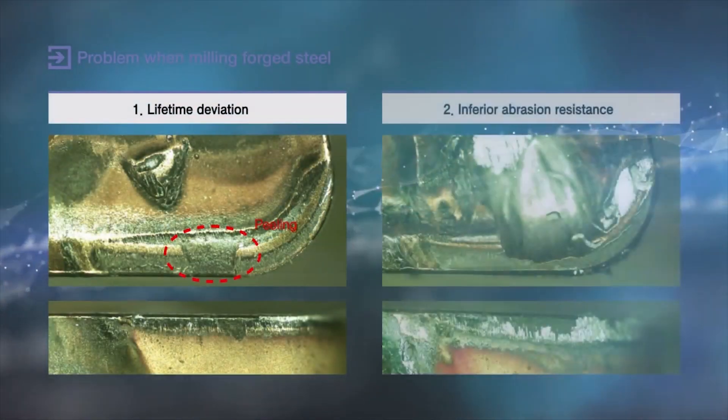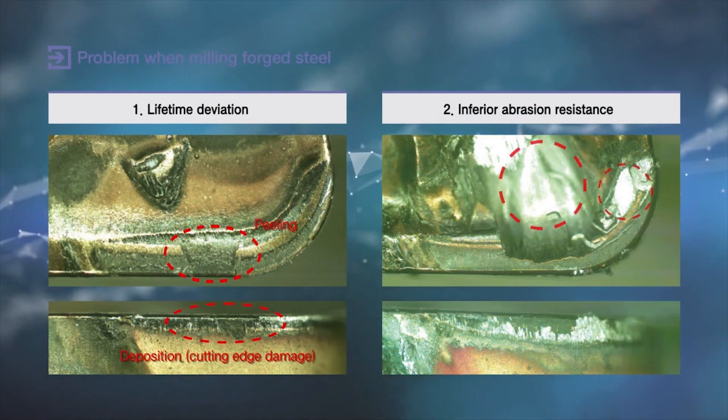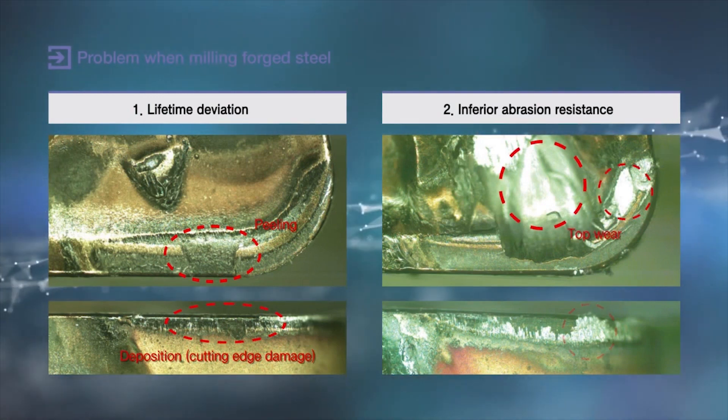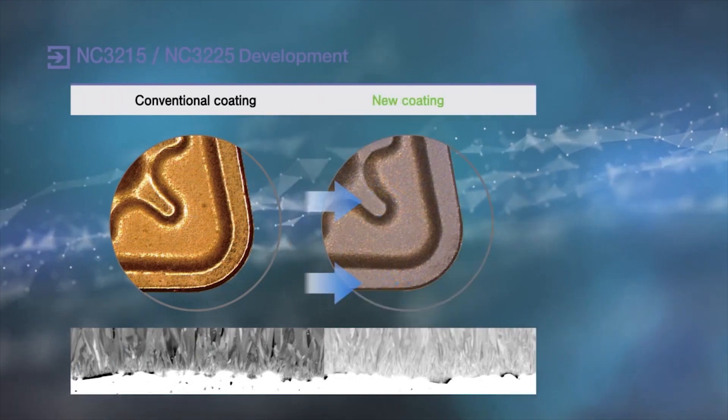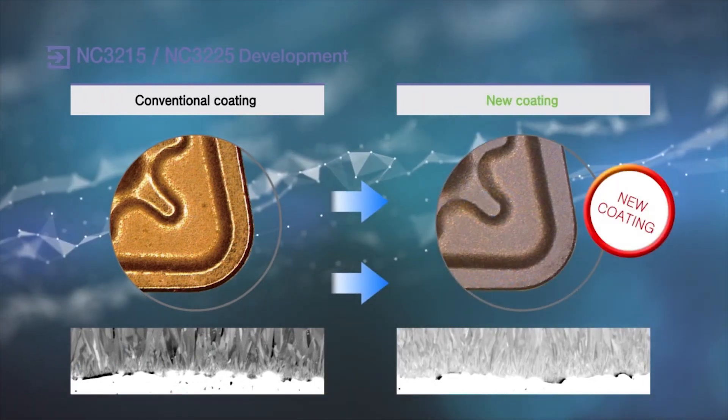NC3215 and NC3225 now provide even further anti-cratering technology versus standard crater wear and the prime culprit, initial delamination.